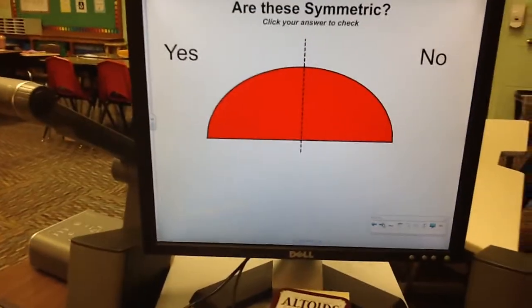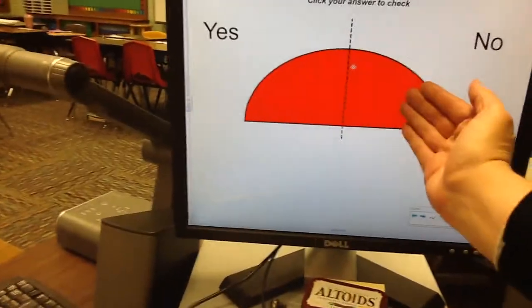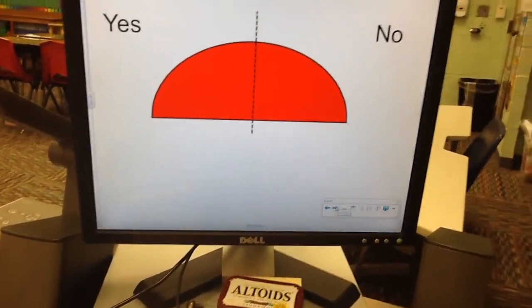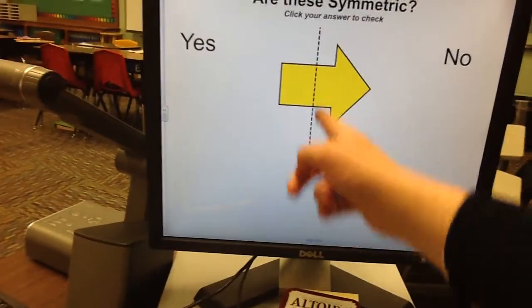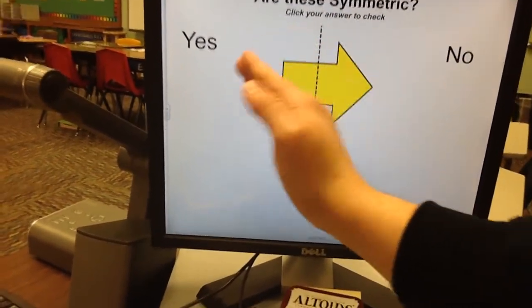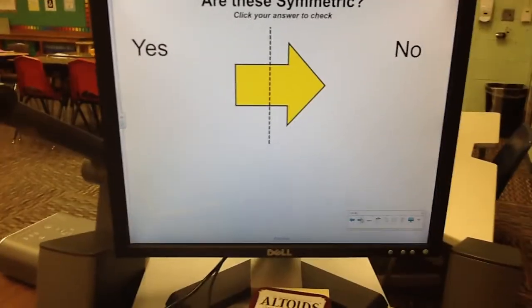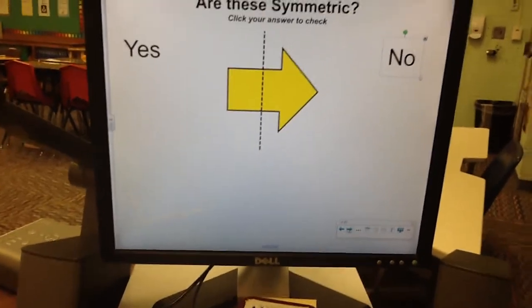Let's check it out. Are these lines symmetric? Well, this one, if we folded this over that line, they would be perfectly equal. So that is a line of symmetry. What about here? We've got a line right down the middle, but if I folded this over, this part has the arrow, this half doesn't. So that would not match, and it is not symmetric.